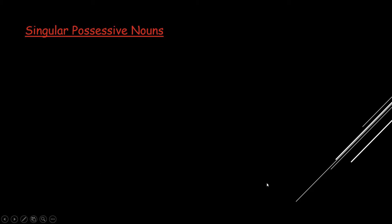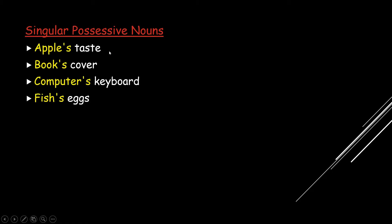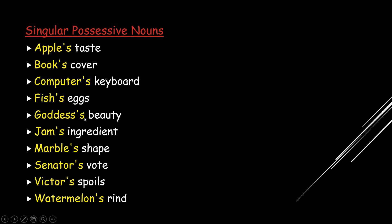There are singular as well as plural possessive nouns. First, the singular possessive nouns. Examples include: apple's taste, book's cover, computer's keyboard, fish's eggs, goddess's beauty, jam's ingredient, marble's shape, senator's vote, richter's spoils, watermelon's rind. Without the apostrophe and the 's', all these words are singular nouns. When we add the apostrophe and the 's', they become singular possessive nouns.